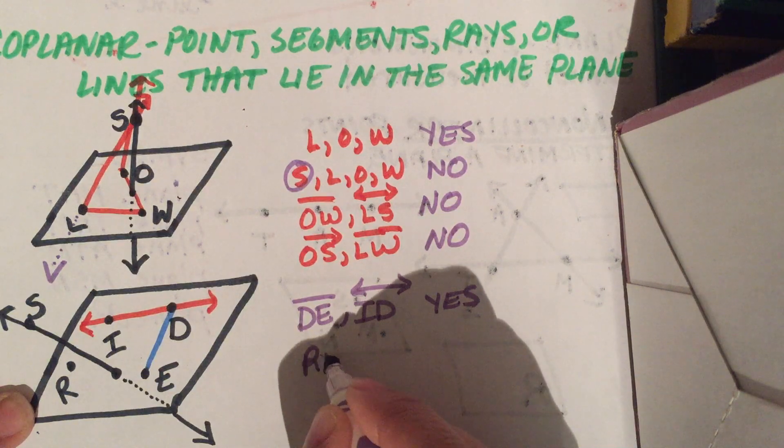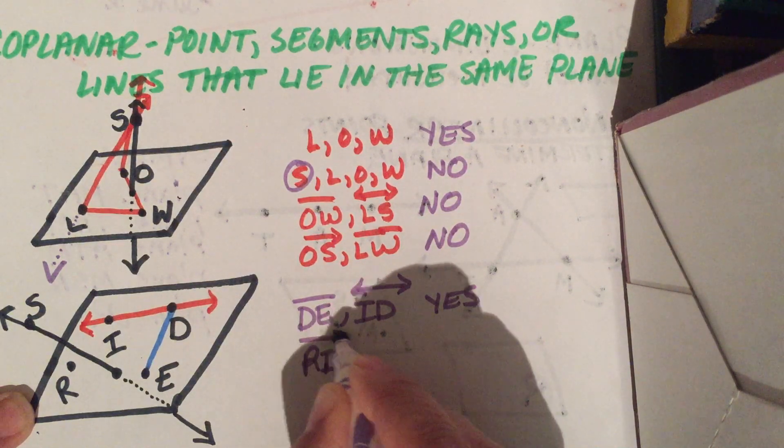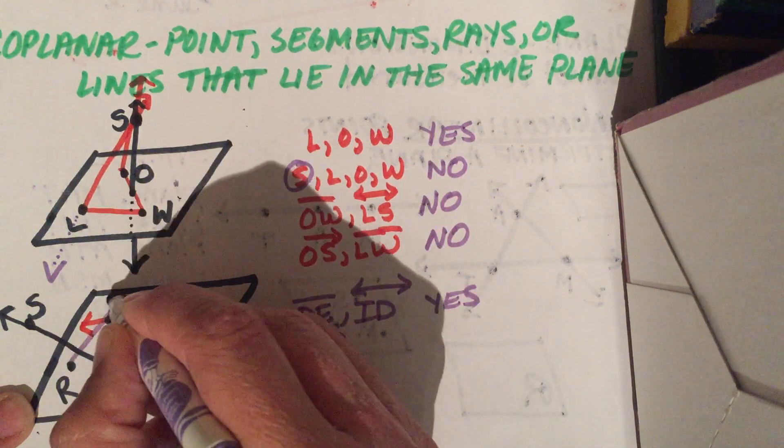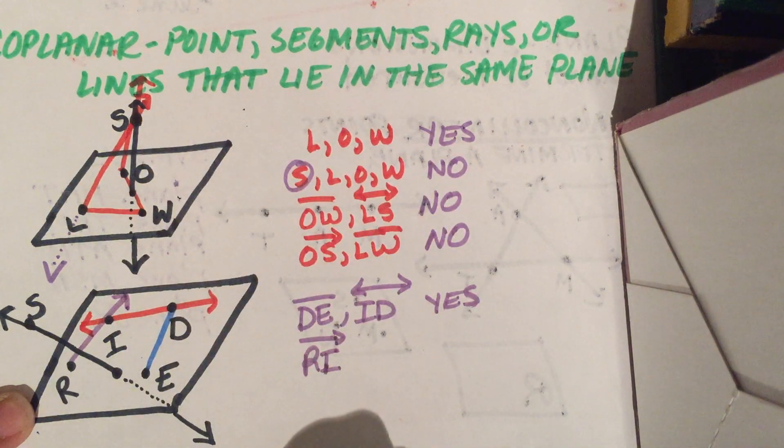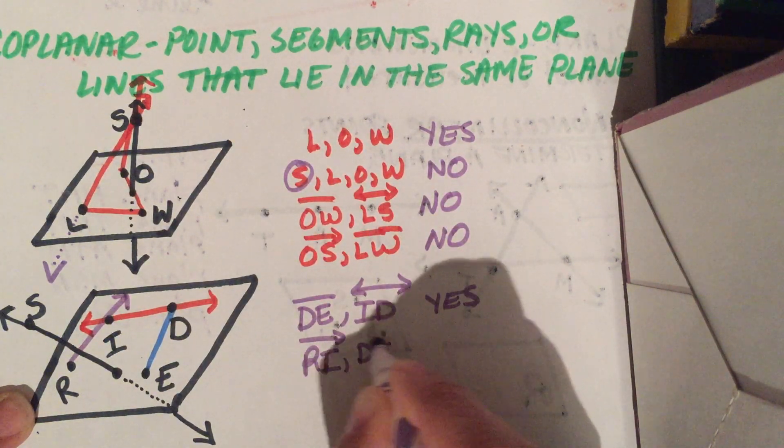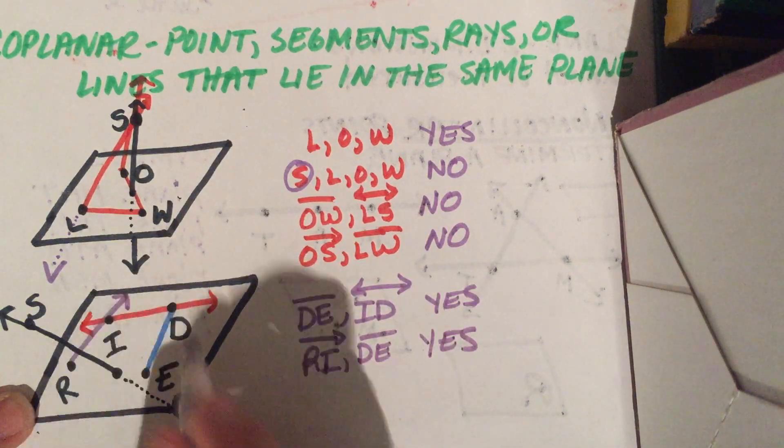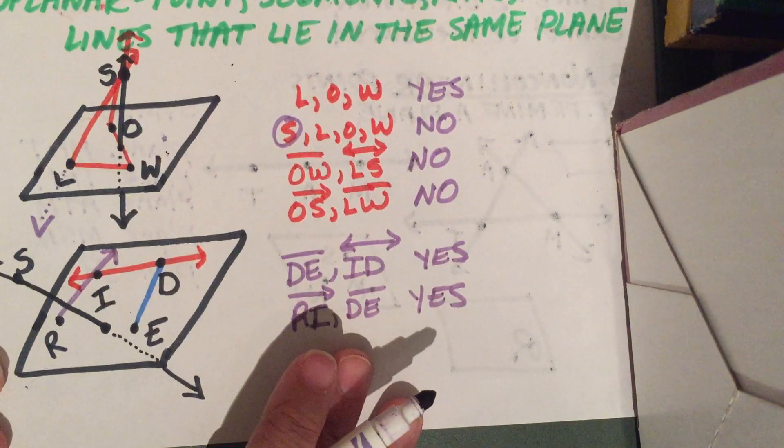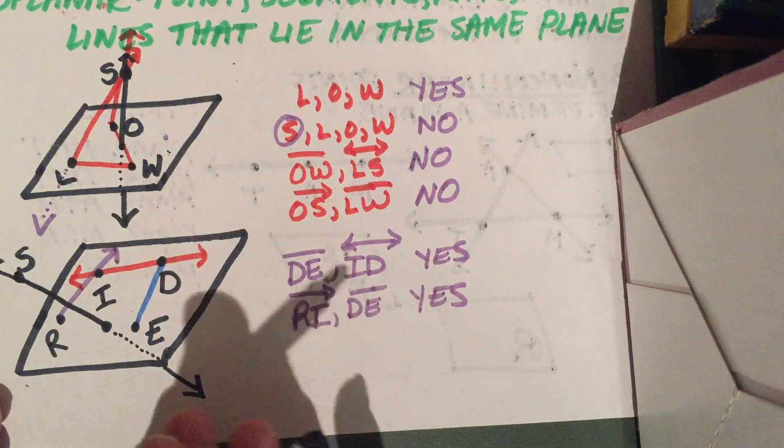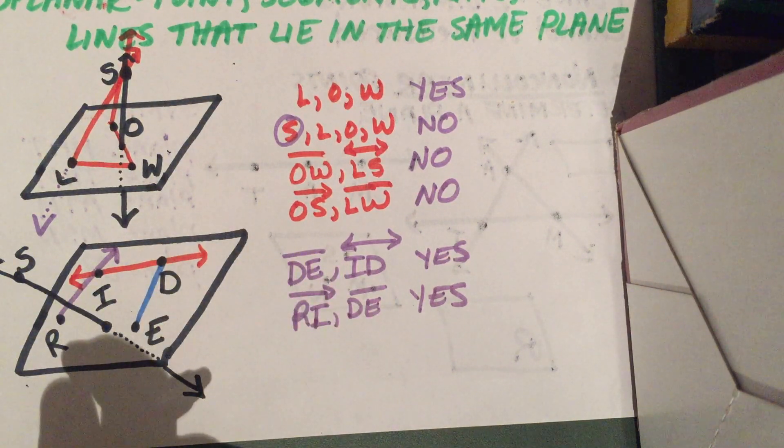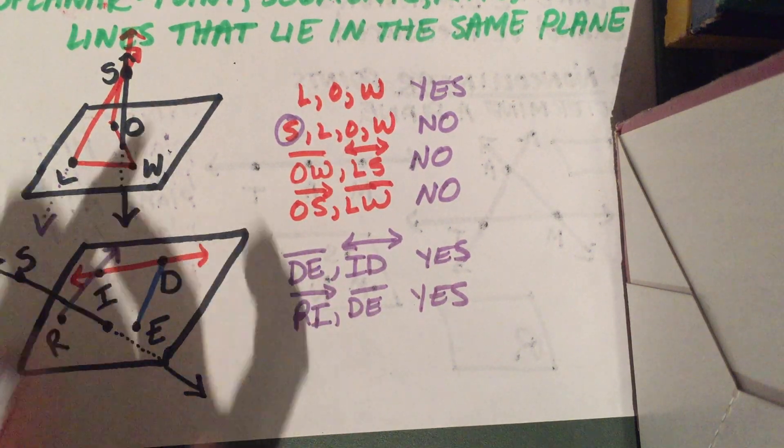Let's say I had ray RI and segment DE. Are those coplanar? Yes, they are. Because RI and DE are in the same plane. Which point extends outside the plane and is not coplanar with the others? That would be the S.